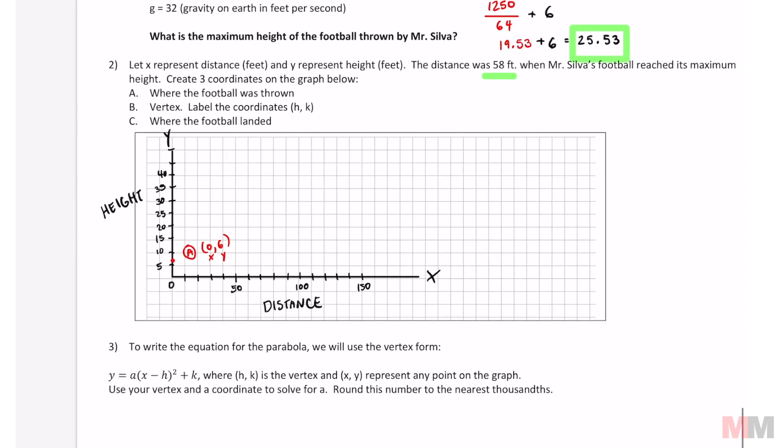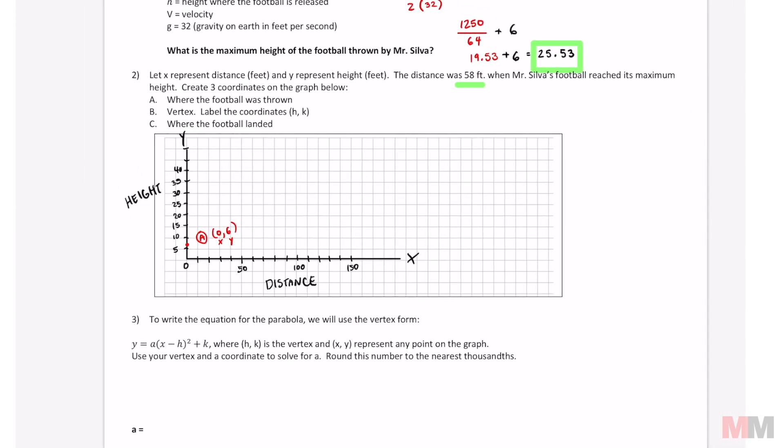Letter B, I'm gonna use a different color for that one. The vertex. This information says that the distance was 58 feet when the football reached its maximum height, and the maximum height we calculated was 25.53. That is where my vertex is. So that blue one is point B. As a coordinate that is (58, 25.53), and we're gonna label that h and k. Anytime you hear h and k, they are just talking about the highest point or the lowest point of a parabola, which is called your vertex.